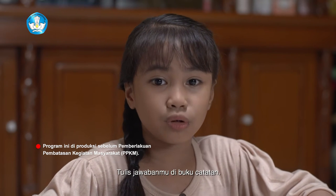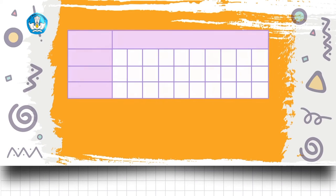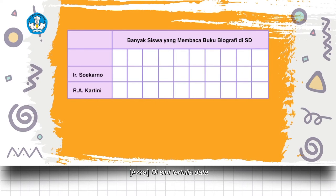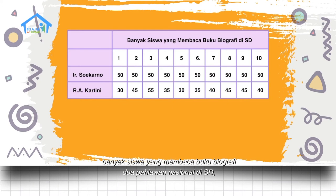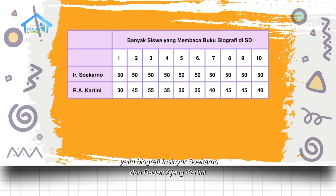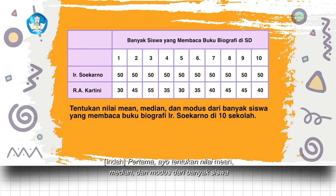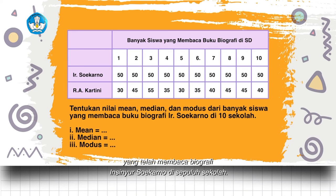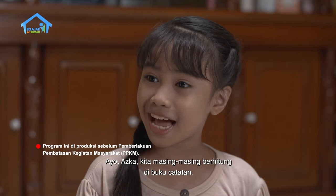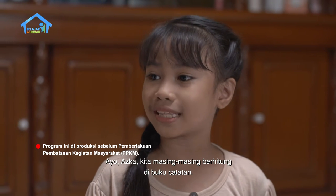Di sini tertulis data banyak siswa yang membaca buku biografi dua pahlawan nasional di SD, yaitu biografi Insinyur Soekarno dan Raden Ajeng Kartini. Pertama, ayo tentukan nilai min, median, dan modus dari banyak siswa yang telah membaca biografi Insinyur Soekarno di 10 sekolah. Ayo Aska, kita masing-masing berhitung di buku catatan.